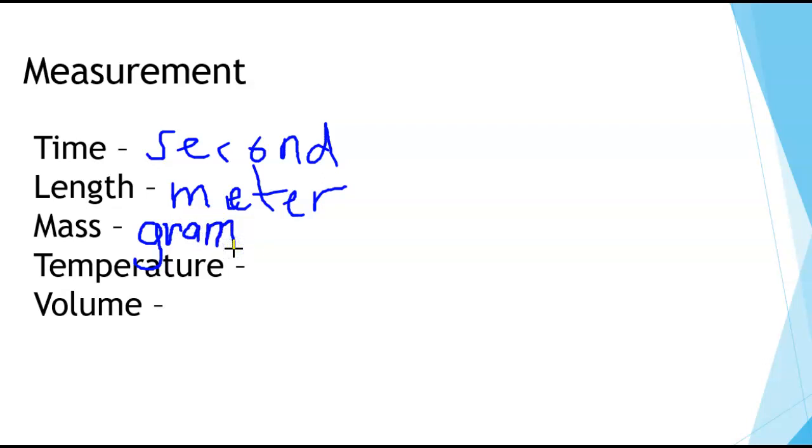We measure mass with a variety of things, but most commonly in science class or in a lab you would use an electronic balance. A while ago before we had electronic balances we used something called a triple beam balance. But in chemistry class we will pretty much solely use an electronic balance, which is much faster and easier.